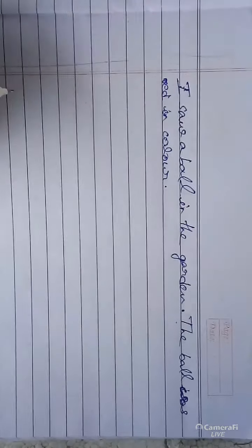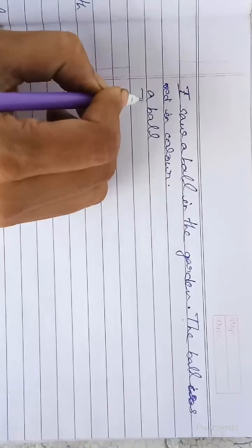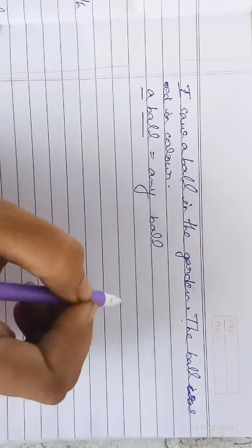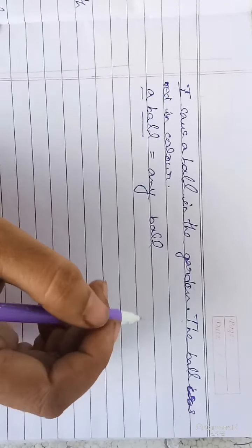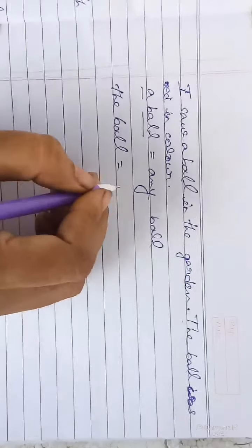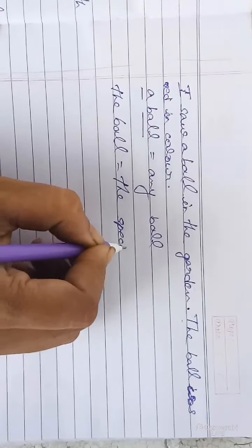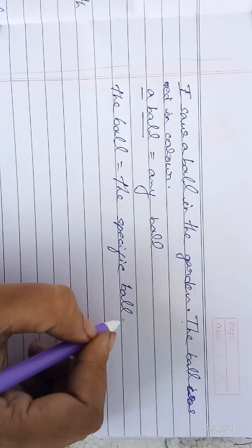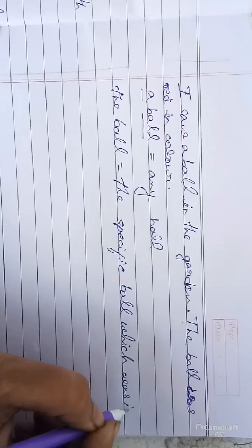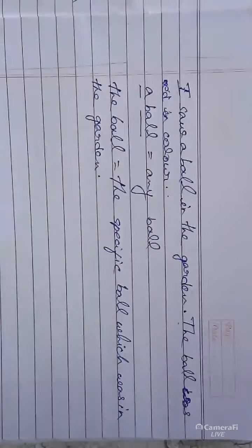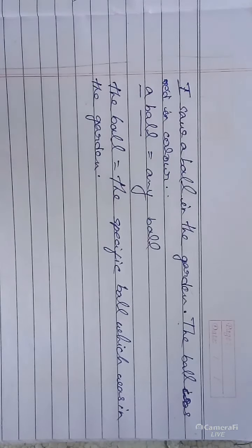See, 'a ball' — that means any ball. 'A ball' equals any ball. But when we write 'the ball', that is the specific ball which was in the garden. 'I saw a ball' means any ball; I am not indicating any color or other things.